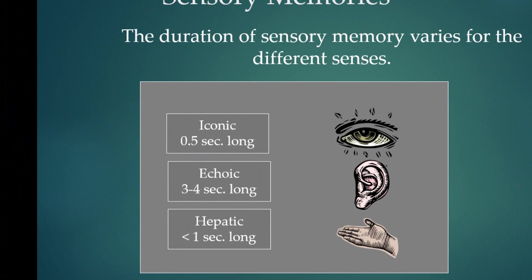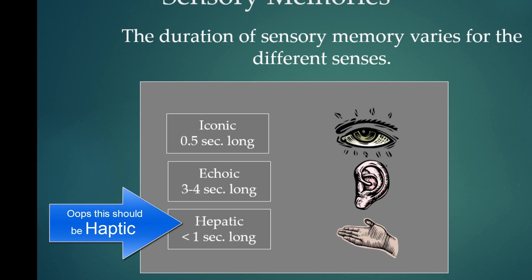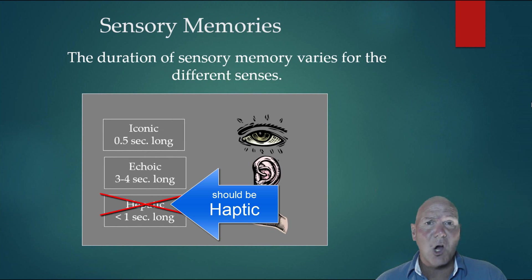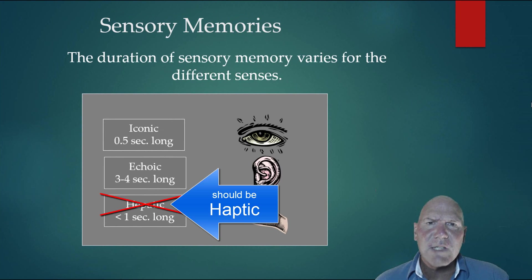Sensory memories include iconic, echoic, and haptic. Iconic memories are those that we see — iconic lasts about half a second and then it's gone. Echoic lasts about three to four seconds. Haptic, which is our sense of touch, would be less than one second. But if we're asked to recall right away, we could. Your echoic memory would be like in class when you're not paying attention to the teacher and they say, 'Just repeat to me what I just said.' For some reason you can pull out the last three or four seconds and you can fool that teacher.